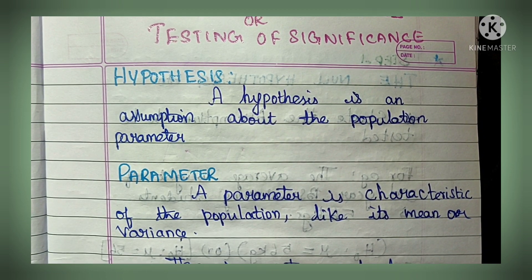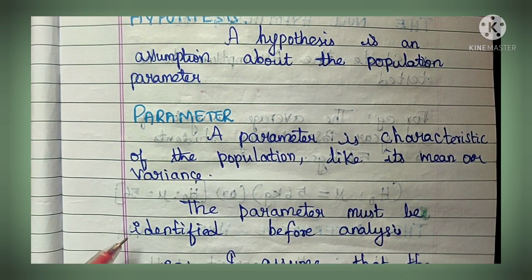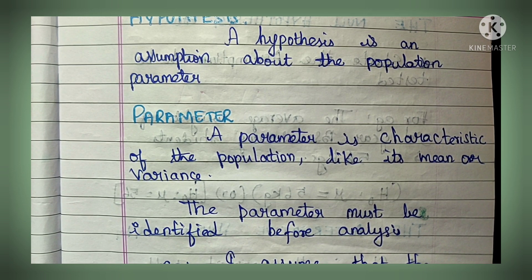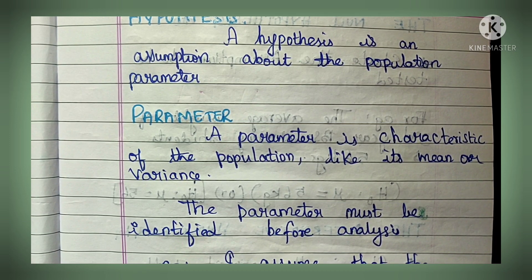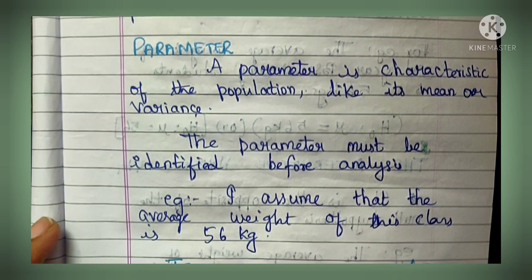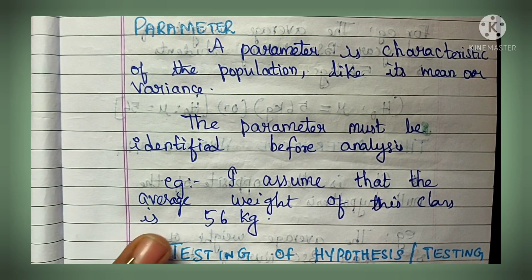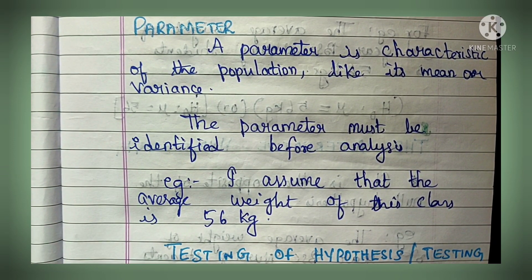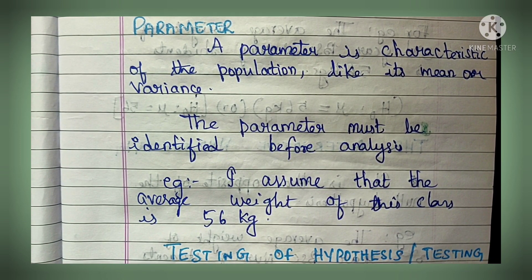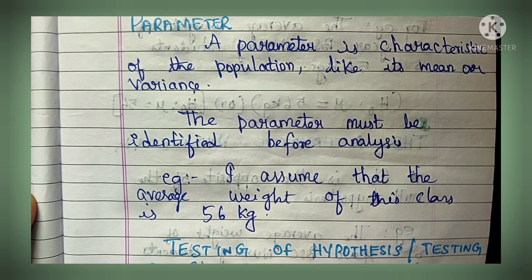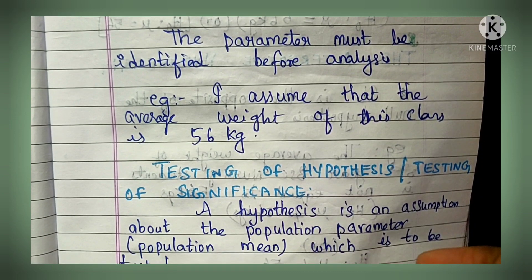The parameter must be identified before analysis; only then can you do data analysis. You have to identify what population parameter you are going to calculate before doing an analysis. For example: I assume that the average weight of this class of third year BSc Nursing students is 56 kg.